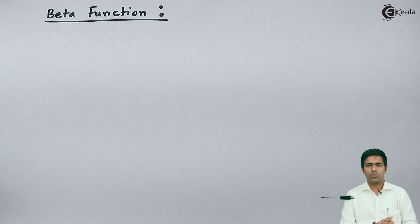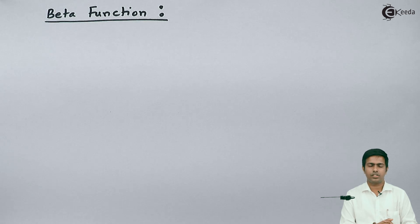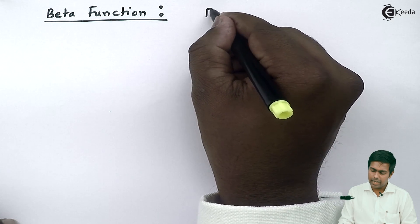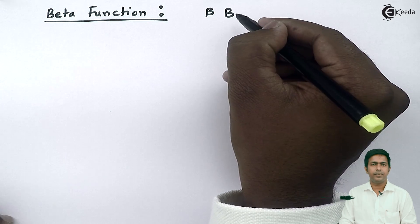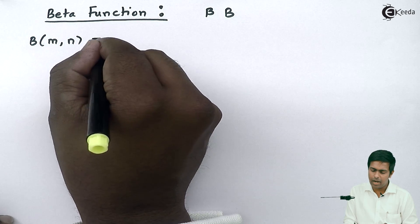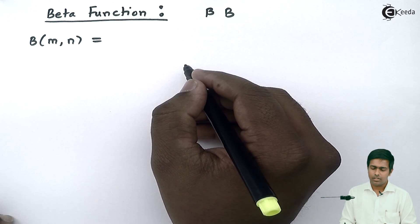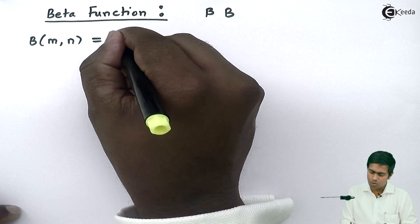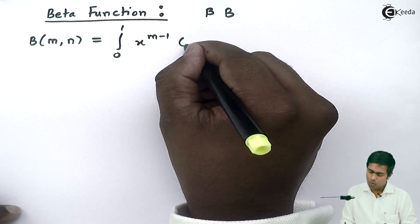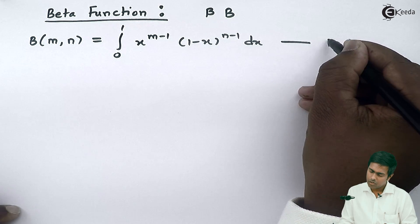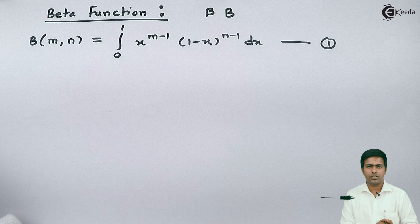Hi friends, today we are going to learn a new concept called the beta function. Beta is a Greek symbol denoted as β or capital B. Beta is a function of m and n, defined by the definite integral from 0 to 1 of x raised to m minus 1 times 1 minus x raised to n minus 1 dx. This is the definition of the beta function.